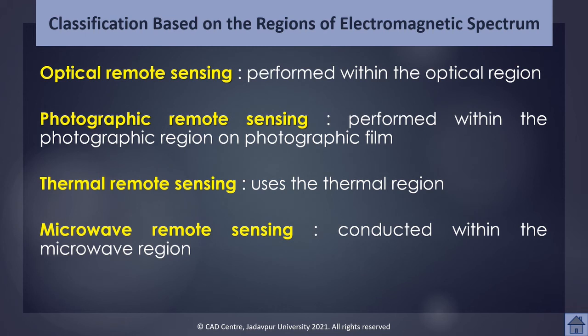Next is classification based on regions of the electromagnetic spectrum. Remote sensing may be performed in different regions of the electromagnetic spectrum. Optical remote sensing is performed within the optical region, that is 0.3 to 3.0 micrometers. Photographic remote sensing is performed within the photographic region, that is 0.3 to 0.9 micrometers. Thermal remote sensing uses the thermal region, that is 3 micrometers to 1 millimeter, and microwave remote sensing is conducted within the microwave region, that is 1 millimeter to 1 meter.